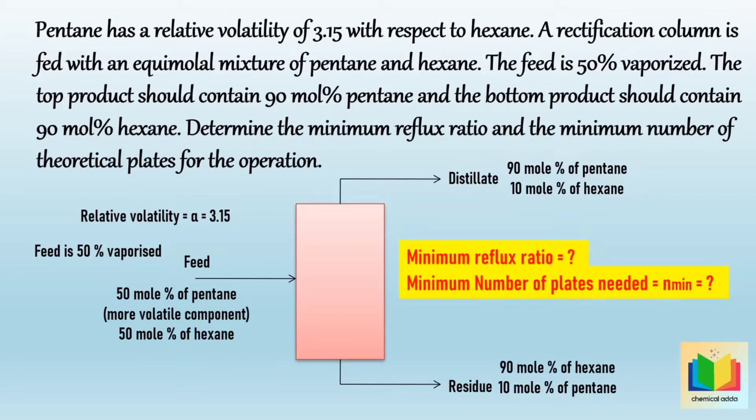In this example we are not given equilibrium data directly, but we have been given relative volatility. So using the relative volatility formula we can calculate equilibrium data. We have also been given the composition of pentane in the distillate and residue. In the first part of the problem we have to calculate the minimum reflux ratio, and in the second part we have to calculate the minimum number of theoretical plates.